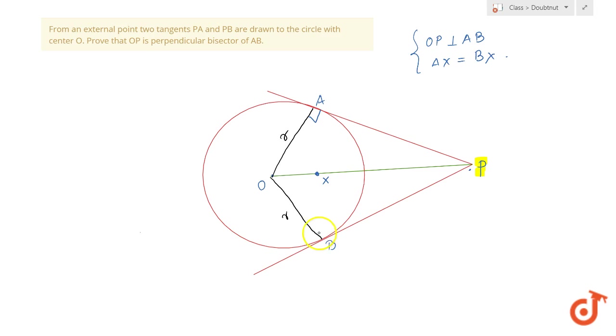I know that the radius drawn at the point of contact of a tangent is perpendicular to the tangent. In any circle, if you have a tangent and you draw a radius at the point of contact, it will be perpendicular to that tangent.